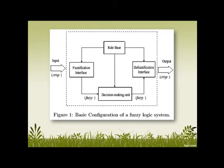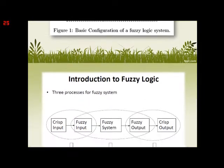The operation of a Fuzzy Logic System is: first, there is input in the Fuzzy Logic System and the program will calculate. There are three processes for the Fuzzy System. First, the input data enters the program. Second, inference — the program will calculate the data into the Fuzzy System and keep the output in the Fuzzy System.